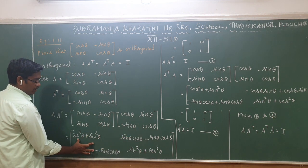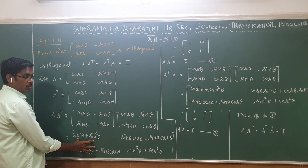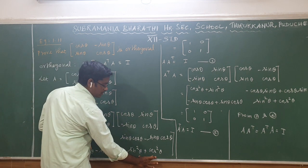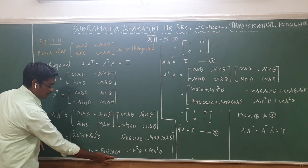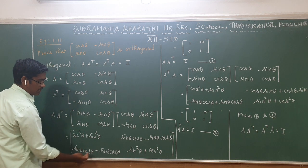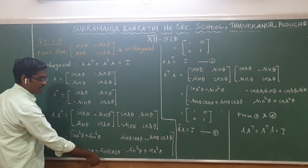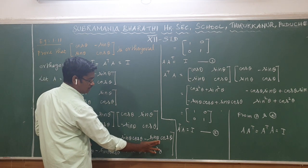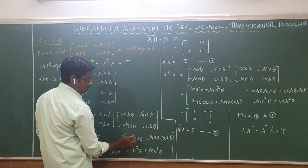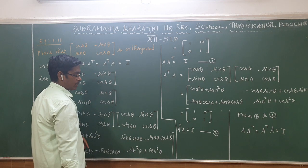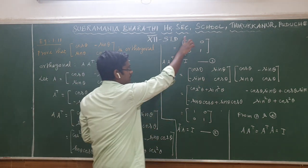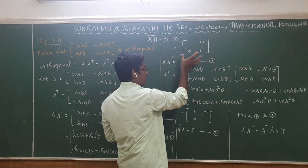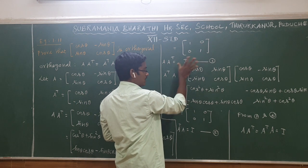Simplifying, we use the formula sin²θ + cos²θ = 1. So the (1,1) element equals 1, and the (2,2) element equals 1. The off-diagonal terms, the plus and minus values cancel out, giving 0. So the result is the matrix [1, 0; 0, 1], which is the identity matrix.